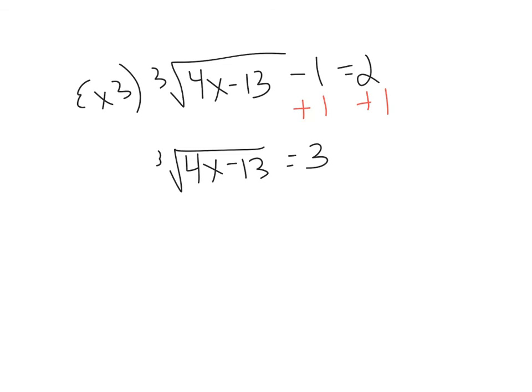And now that the cube root is isolated, I can cube both sides to undo the root. So cubing is just going to undo the root. 4x minus 13 equals 3 cubed is 27. And solve for x. If we isolate the x, I can add 13 to both sides. 4x is going to equal 40.